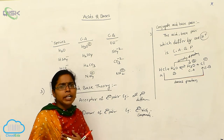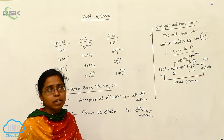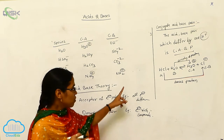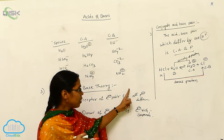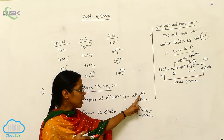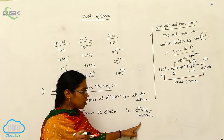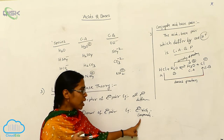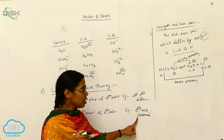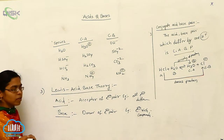Negative charge also indicates that more electrons are present, so we can say anions are Lewis bases. Cations and empty orbital-containing compounds are Lewis acids. Electron rich compounds with negative charge — anions — and those which have lone pairs of electrons are Lewis bases.